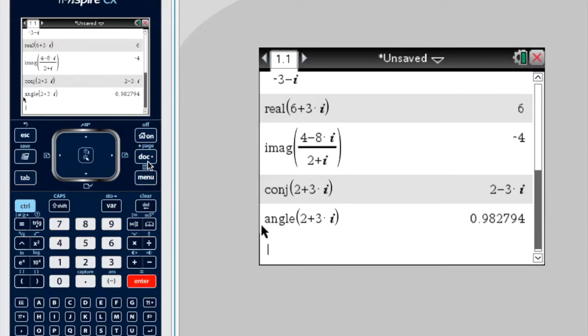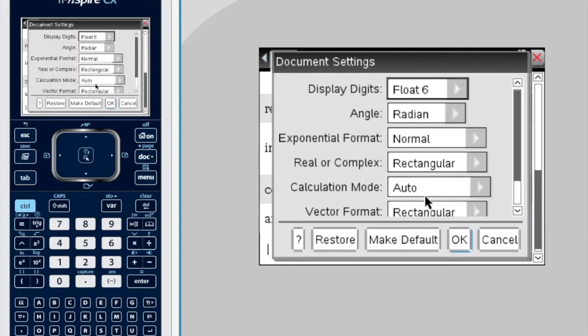Now, let's have a look at our document settings. So document settings. Our angles are in radians. Now, if you want to change it to degrees, that's fine too. It's up to you what you want.